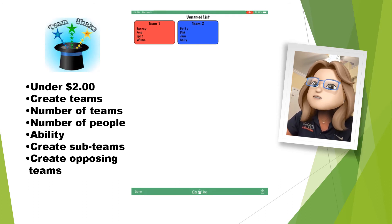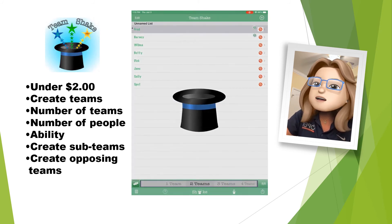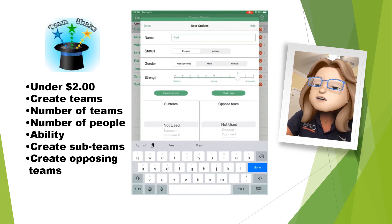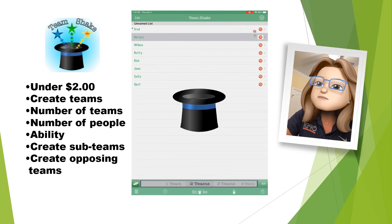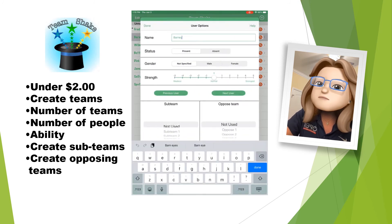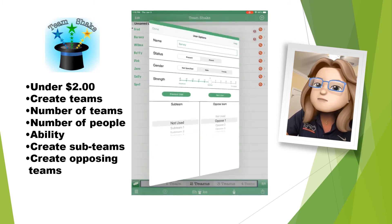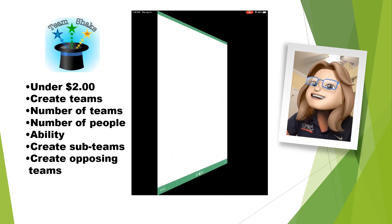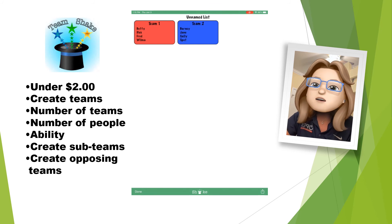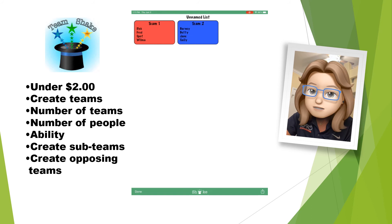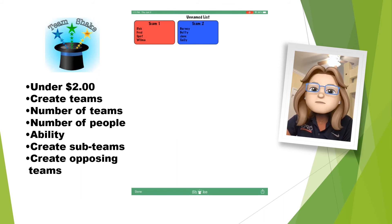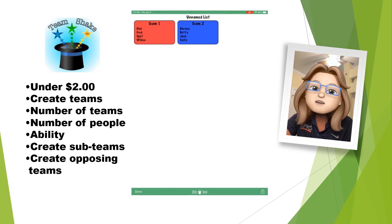Now, if I were to go to those same two people and instead of putting them on sub teams, put them on opposed teams — this time when I shake, Fred and Barney will be on different teams and they will continue to be on different teams no matter how much I shake. So that is a very powerful tool if you want to split up players that don't get along with one another, or players with abilities that you would like to separate.